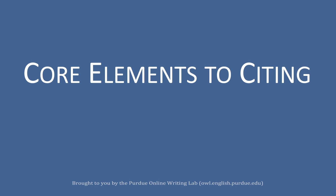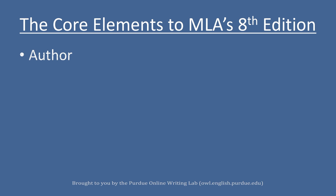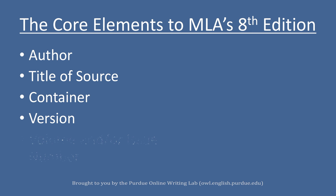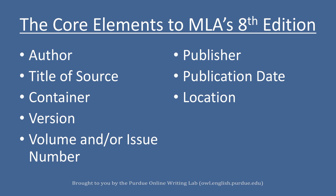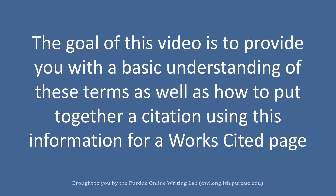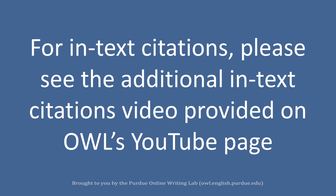There are eight core elements to citing a source in MLA's 8th edition: Author, Title of Source, Container, Version, Volume and/or Issue Number, Publisher, Publication Date, and Location. The goal of this video is to provide you with a basic understanding of these terms as well as how to put together a citation for a Works Cited page. For in-text citations, please see the additional in-text citations video provided on OWL's YouTube page.